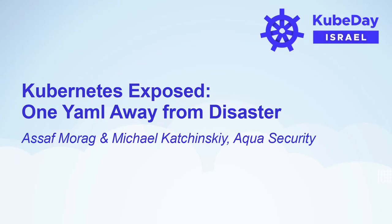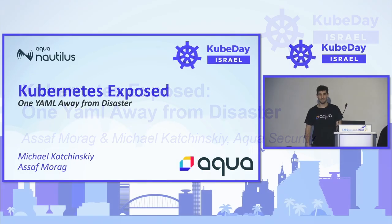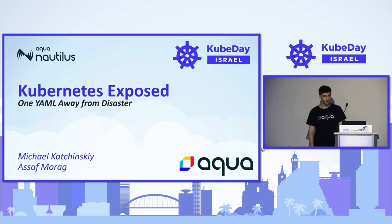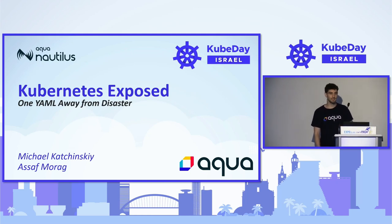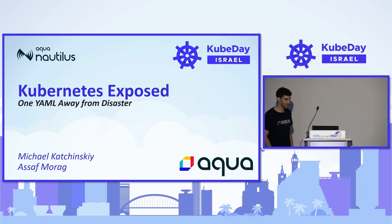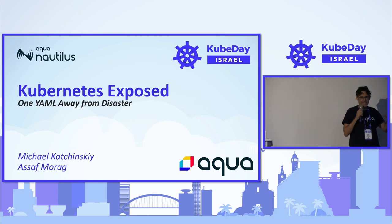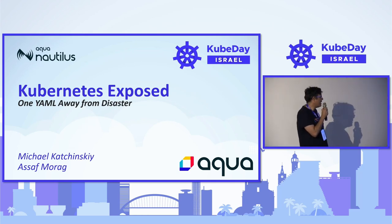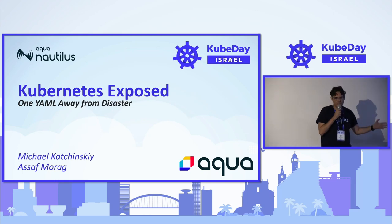Hello everyone, my name is Mikhail Kaczynski and I'm a security researcher at Aqua. I'm also a computer science student at the Technion in Haifa. At my work at Aqua I focus on researching and analyzing new attack vectors on cloud native environments. Hi, and my name is Asaf Morag. I'm very excited to be here. I lead threat intelligence and data analysis with Aqua Nautilus.